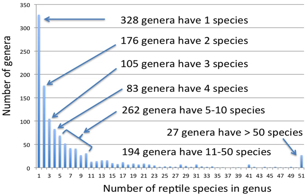In binomial nomenclature, the genus name forms the first part of the binomial species name for each species within the genus. For example, Panthera leo and Panthera onca are two species within the genus Panthera. Panthera is a genus within the family Felidae.